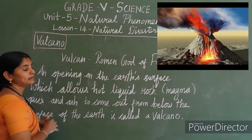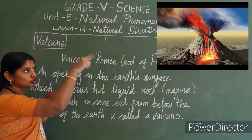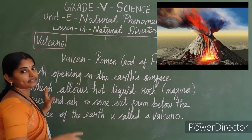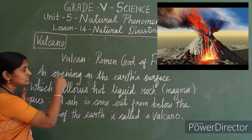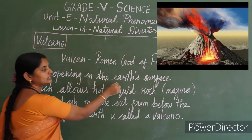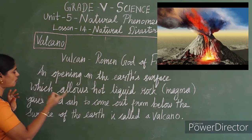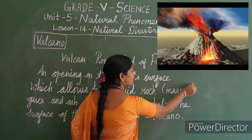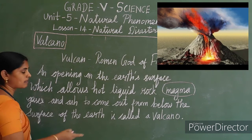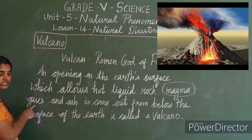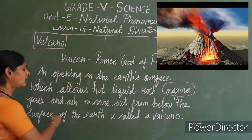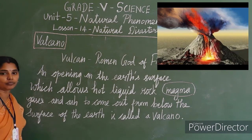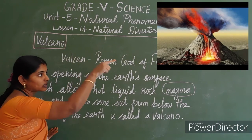Even as it oozes out, look at the picture of the volcano itself — through that opening only it comes out. Look at the definition: an opening on the earth's surface. If it oozes out, you could call it magma, or liquid rock. That we call magma — the liquid rock. It also comes out at the surface of the earth. And gases and ash — stuff that comes out from below the surface of the earth is called a volcano.